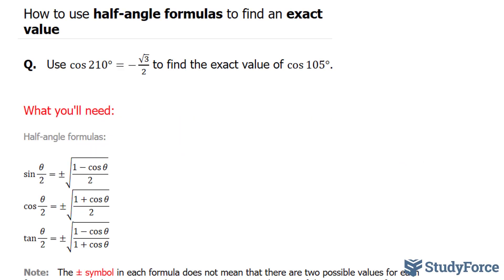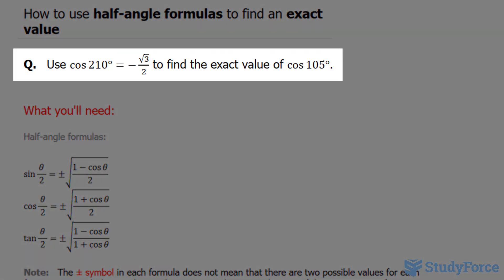In this lesson, I'll show you how to use half angle formulas to find an exact value. The question reads: use cosine of 210 degrees which is equal to negative the square root of 3 over 2 to find the exact value of cosine of 105 degrees.